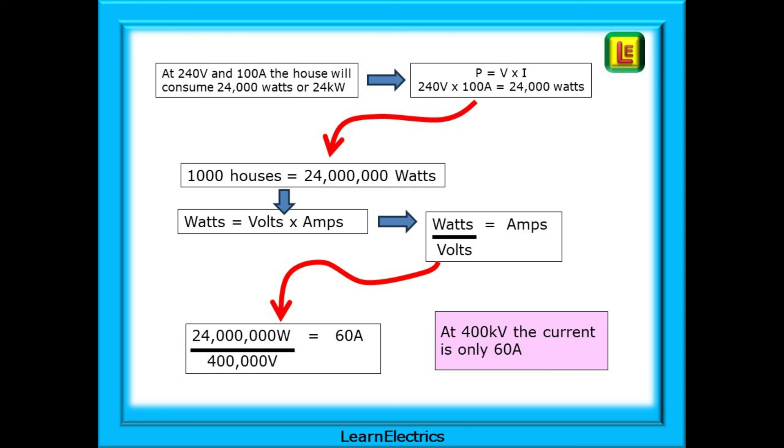Now 24 million watts divided by 400,000 volts is just 60 amps of current. This means that supplying 1,000 houses with 100 amps will only require 60 amps of current in the 400,000 volt transmission lines. A lot less current, much smaller cable sizes, less voltage drop and less heat, and a lot less weight for the pylons to support. Win-win all round.